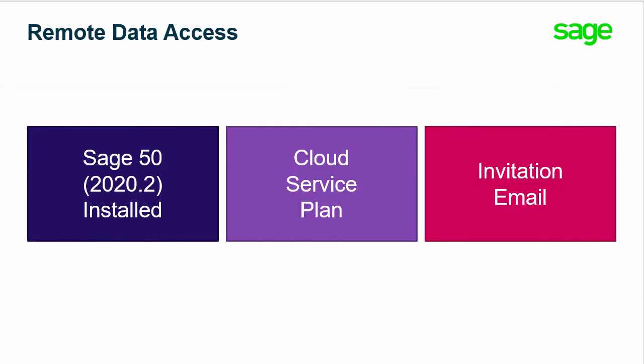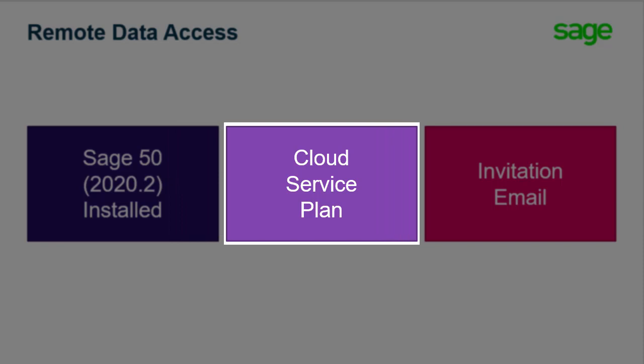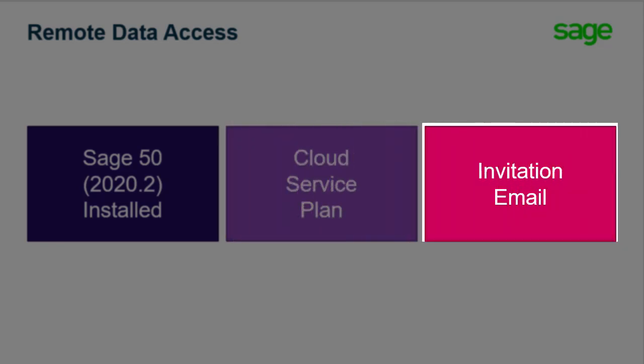Each Remote Data Access user will need the following to access the service: have Sage 50 Cloud Accounting Canadian Edition 2020.2 or later installed — in other words, the user has a licensed copy of the software; have a valid cloud subscription — meaning the user has a service plan in good standing and not expired; and have received an invitation email from another user — meaning the user provided their email address and/or SageID and has been successfully added to the shared company file.